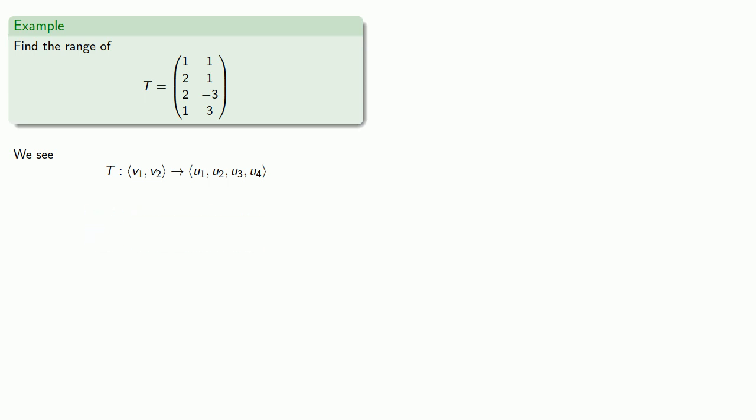So we want to find the range, so we want to find what U1, U2, U3, U4 could be. We can find this by solving our system.